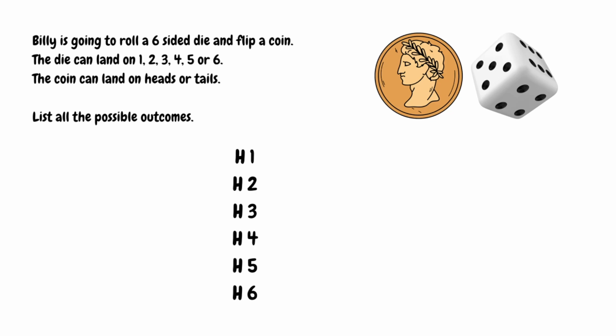Now we've covered all the possible combinations that include heads, we simply move on to tails and do exactly the same thing. We could get tails with 1, tails with 2, tails with 3, tails with 4, tails with 5, and finally tails with 6.